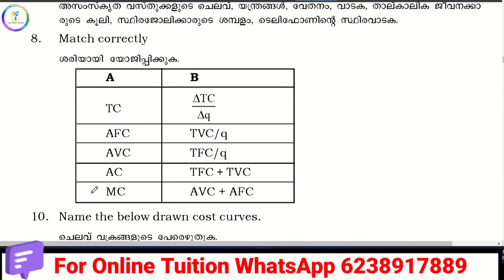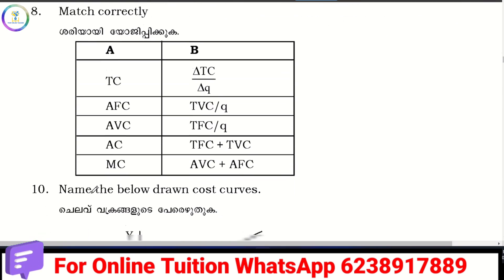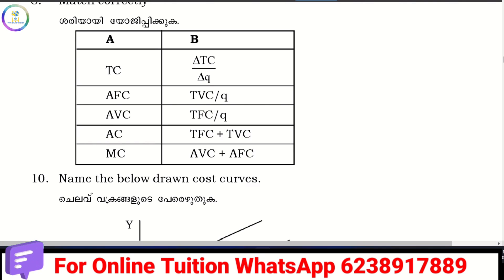Corrected match: TC equals TFC plus TVC. AFC equals TFC divided by quantity. AC equals AFC plus AVC. MC equals delta TC by delta Q. So that is the match.